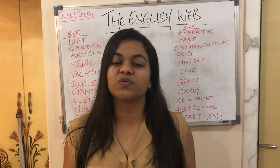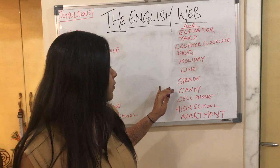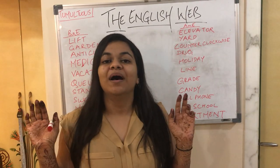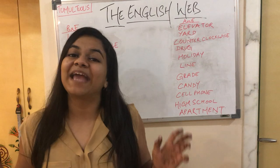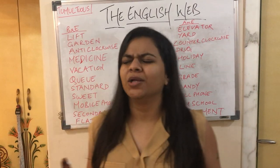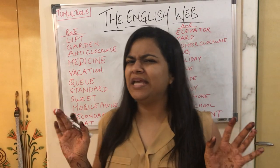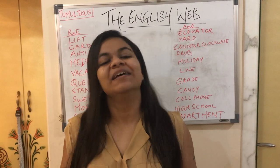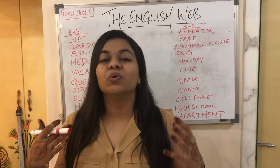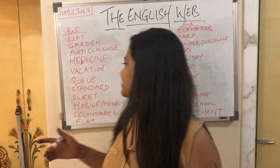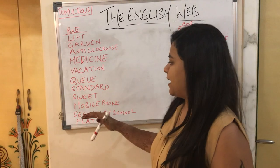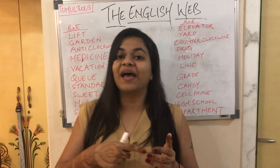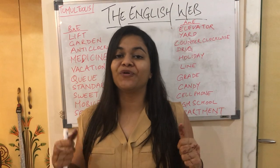The next word is 'sweet.' For example: 'I would love to have something sweet — are you going to a sweet store?' In the US, people refer to a sweet shop as a 'candy shop.' Are you craving some candies? So you use the word 'candy' instead of 'sweets' in American English.